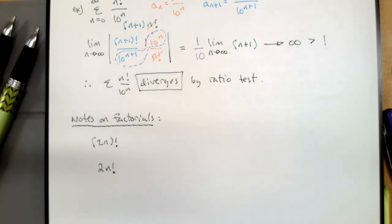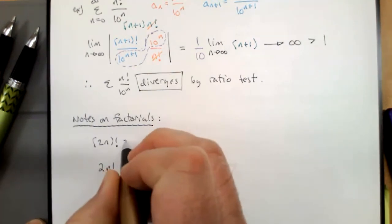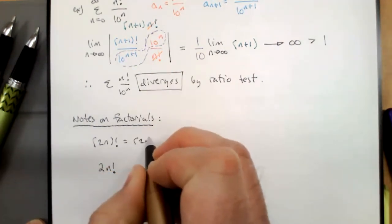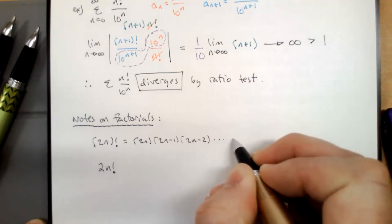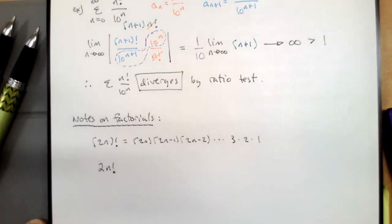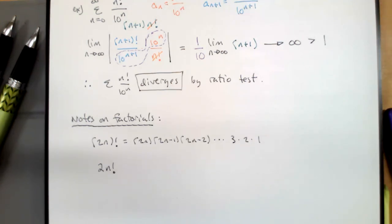We're going to see a lot of factorials in expressions involving only even powers. When we write (2n) factorial, the first factor is 2n and then we count down by one: 2n times (2n−1) times (2n−2) and so on — we still step down by 1. This is important to keep in mind when running the ratio test with 2n factorials.